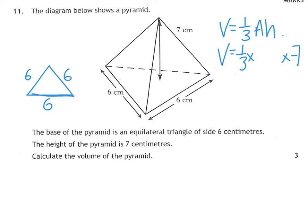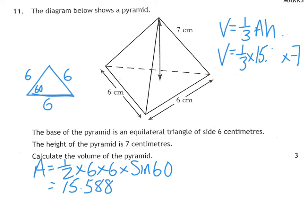If you've got an equilateral triangle that's 6, 6, and 6, you need the area. You can split it down the middle and use Pythagoras to get the height, or just know that because it's equilateral your angle is 60, then use half AB sin C. The area is a half times 6 times 6 times sine 60, which gives us 15.588. Our volume is a third times 15.588 times 7, and I get an answer of 36.37 cubic centimetres.